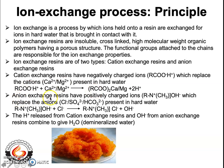Now let us come to the anion exchange resin. They have positively charged functional groups. An example is a quaternary ammonium salt having a hydroxyl ion. This positively charged species helps in trapping all the anions present in hard water, such as chloride ions, sulfate ions, or bicarbonate ions. When these are passed through the anion exchange resin, all the anions get trapped to the positively charged species.